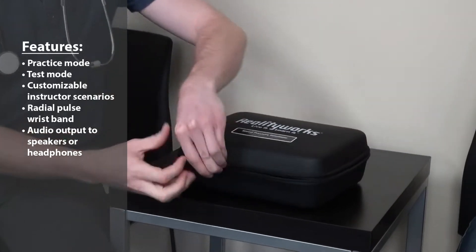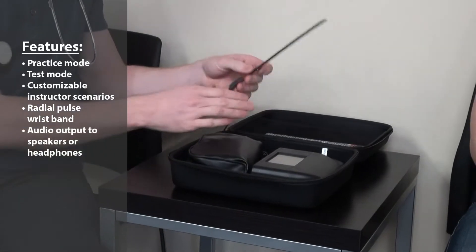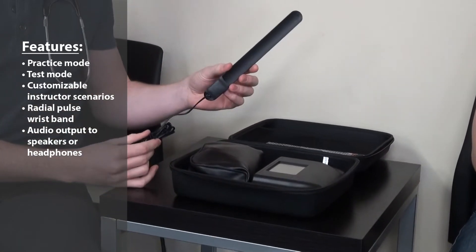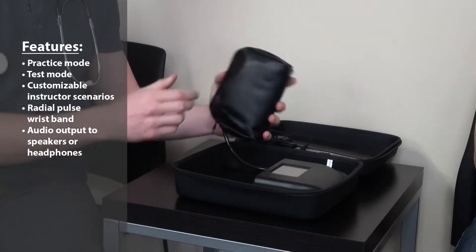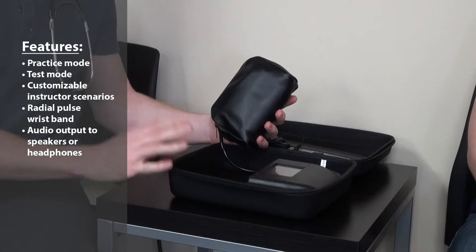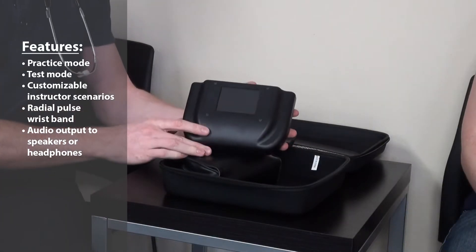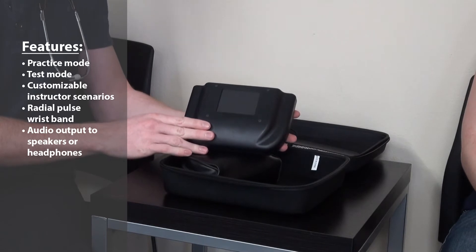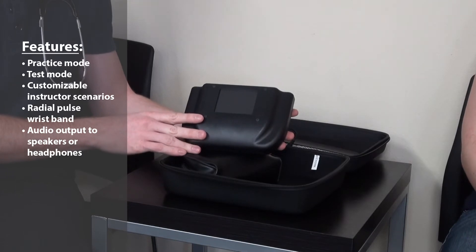Included is a pulse wristband for measuring the radial blood pressure, a standard adult cuff that does not inflate as to not cut off circulation in the students, as well as a comprehensive user interface that generates random practice scenarios as well as ten programmable testing scenarios.